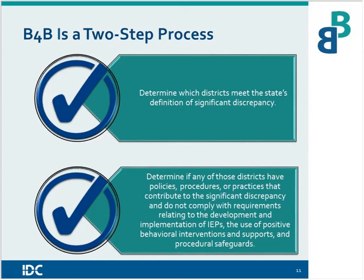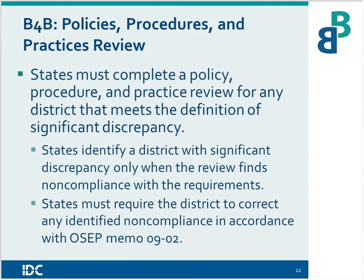States must conduct this review of policy, procedure, and practice for any district that met that definition. You identify a district with significant discrepancy by race and ethnicity only when they met the state definition and they had noncompliance after you've done the policies, procedures, and practice review. So there's a very distinct difference between A and B in when the review comes in and how it impacts the determination of significant discrepancy. If you find noncompliance in significant discrepancy, you must require those districts to correct that identified noncompliance.